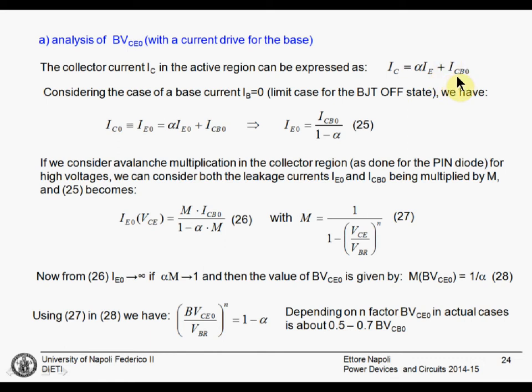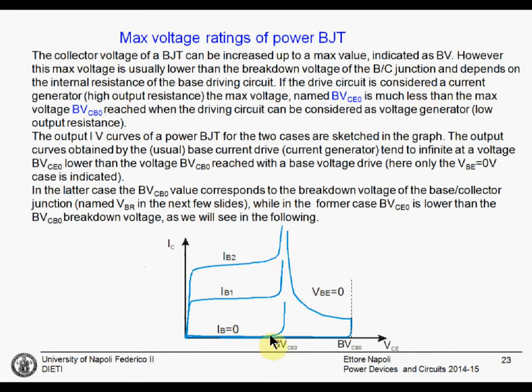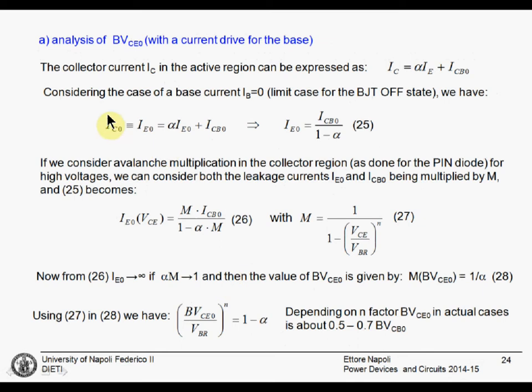Here we need to take into account the leakage current of the collector to base junction. Normally, when IC is very large, IE is very large, we neglect this ICB0. But since we are considering this case, the leakage current, the collector current is small, the leakage current will be significant. Let's now consider the case of a base current that tends to zero. It is very small. The limit case for the BJT in the off state. We will have that IC0 will be equal to IE0 since the base current is zero. And it will be alpha multiplied IE0 plus ICB0. We can obtain IE0 as a function of ICB0. And it is ICB0 divided 1 minus alpha. It is a very small value.